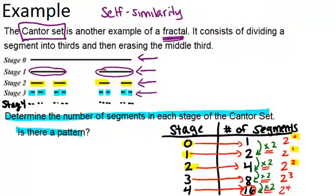In stage 2, there's 2 to the 2 segments, and so on. So that means the pattern would be the number of segments is always 2 to the n, where n equals the stage number.